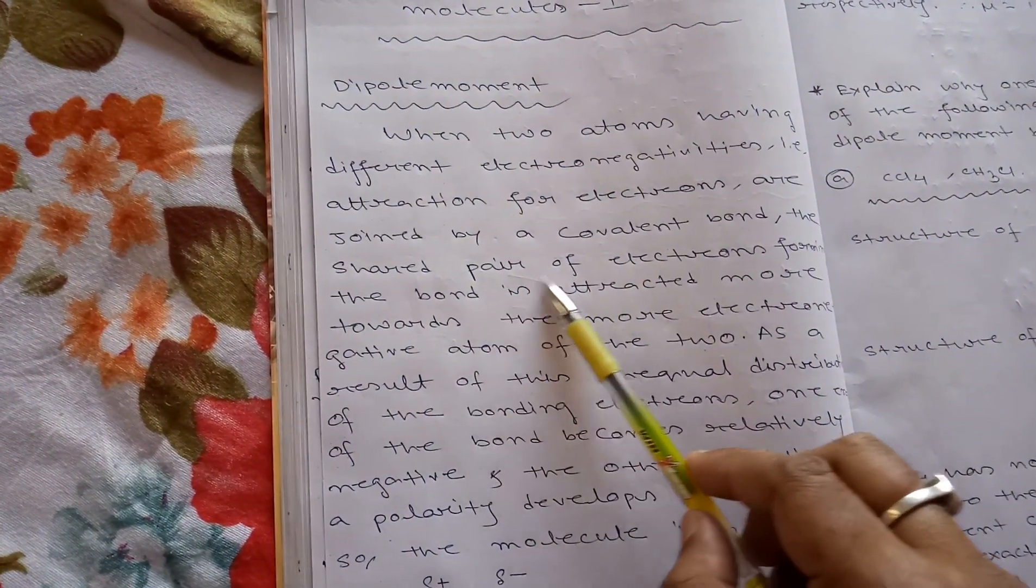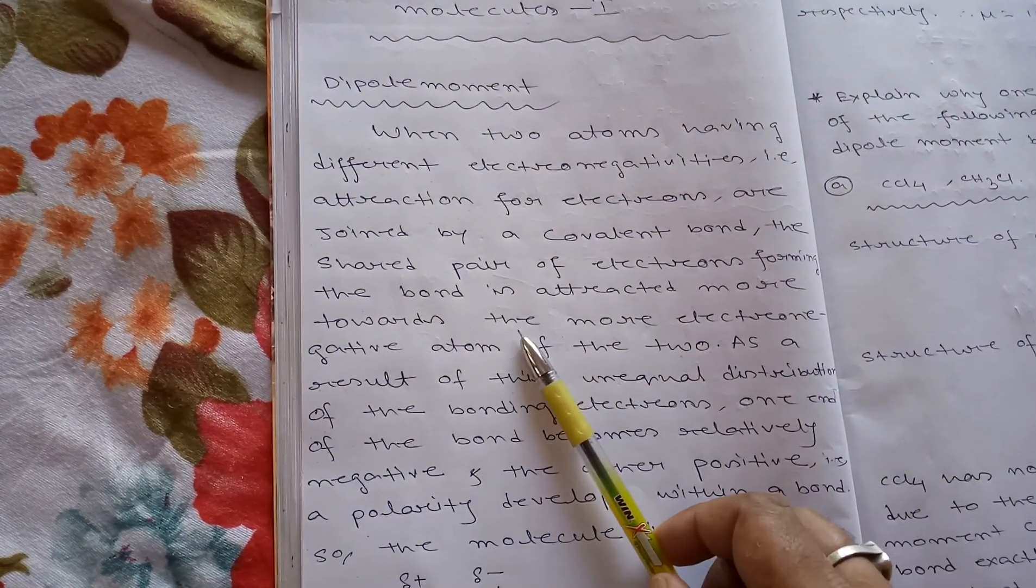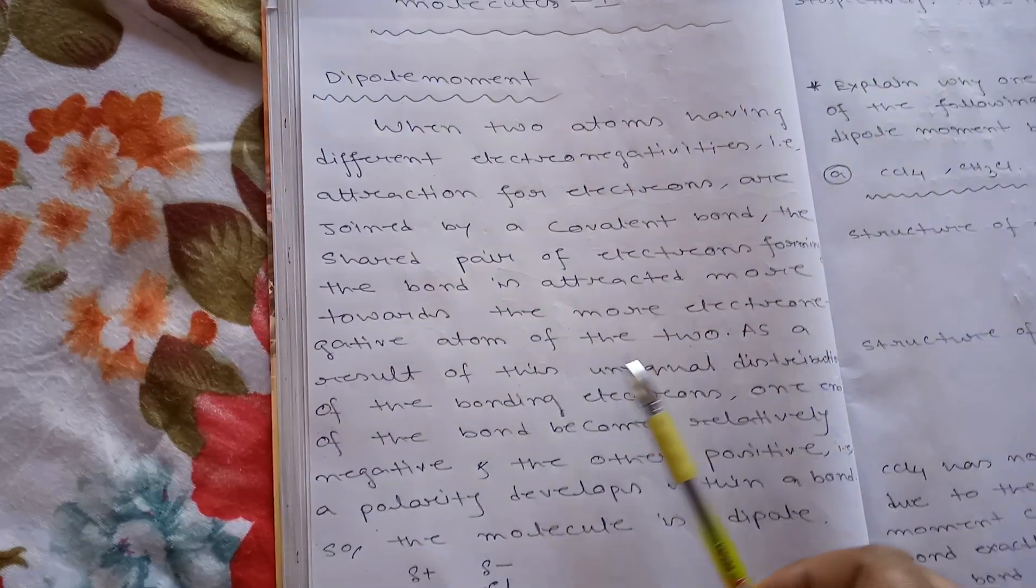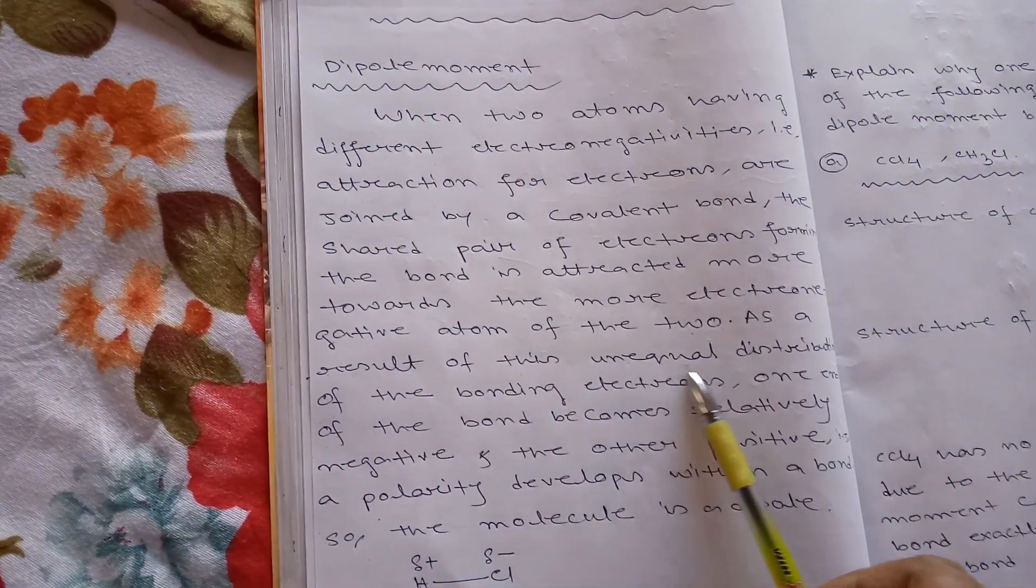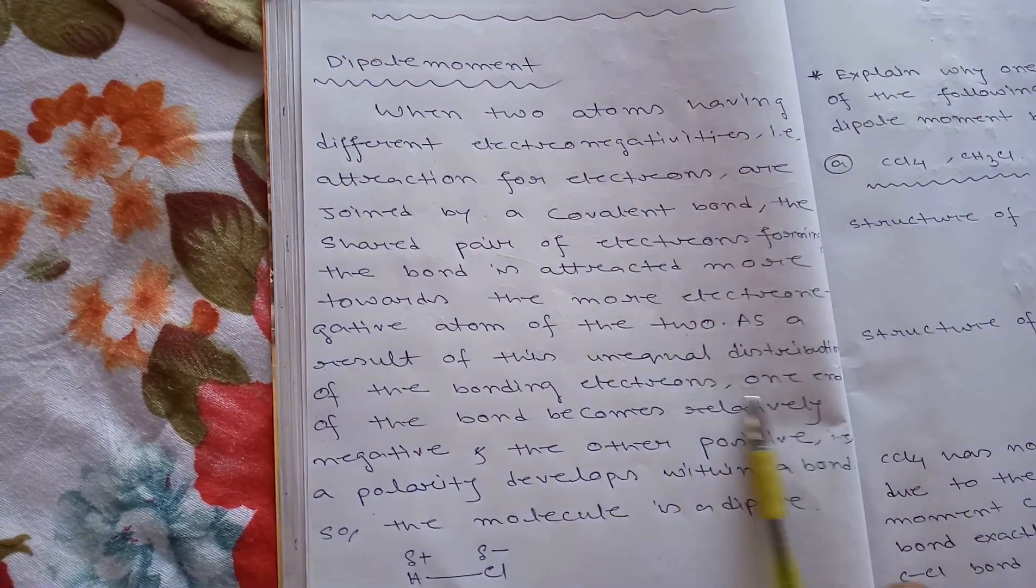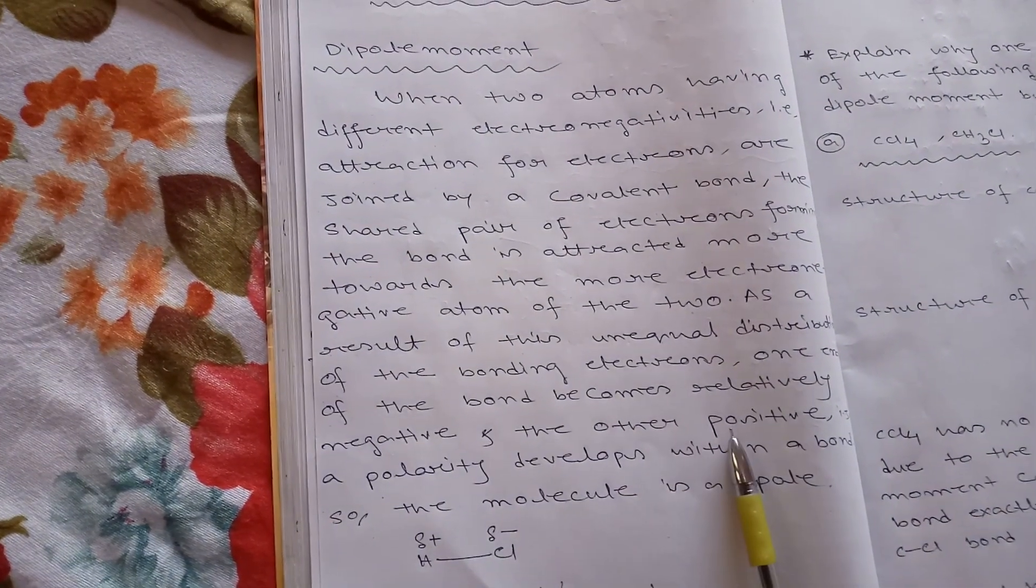the shared pair of electrons forming the bond is attracted more towards the more electronegative atom of the two. As a result of this unequal distribution of the bonding electrons, one end of the bond becomes relatively negative and the other positive.